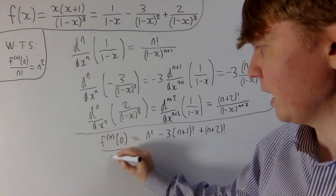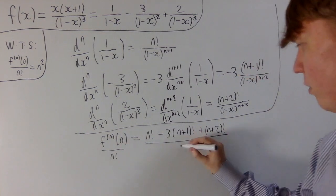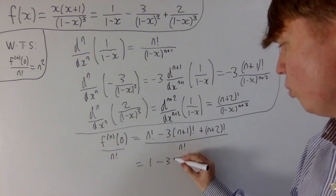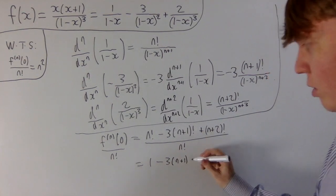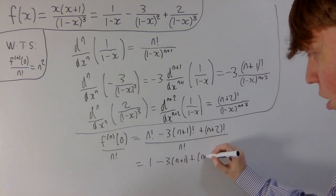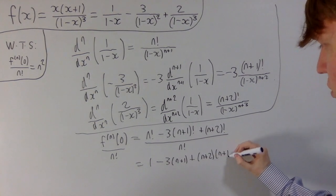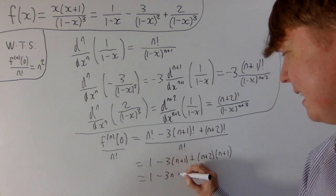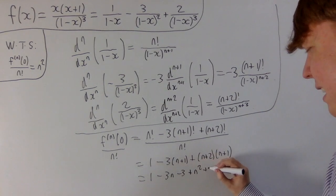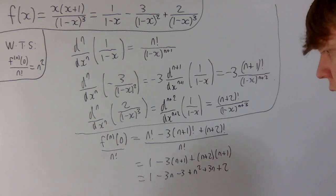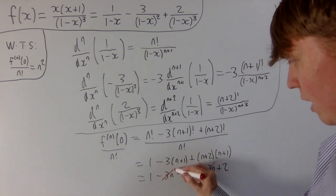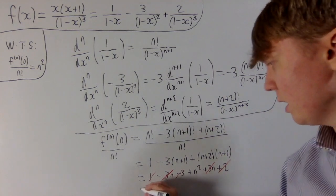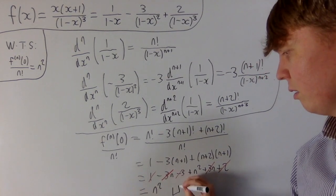Now let's divide by n!. Each term simplifies: n!/n! = 1; then minus 3·(n+1)!/n! leaves minus 3(n+1); and (n+2)!/n! leaves (n+2)(n+1). Expanding all the brackets: 1 minus 3(n+1) plus (n+2)(n+1) gives 1 minus 3n minus 3 plus n² plus 3n plus 2. Your plus 3n and minus 3n cancel, and 1 minus 3 plus 2 also cancels to 0, leaving just n², as required.